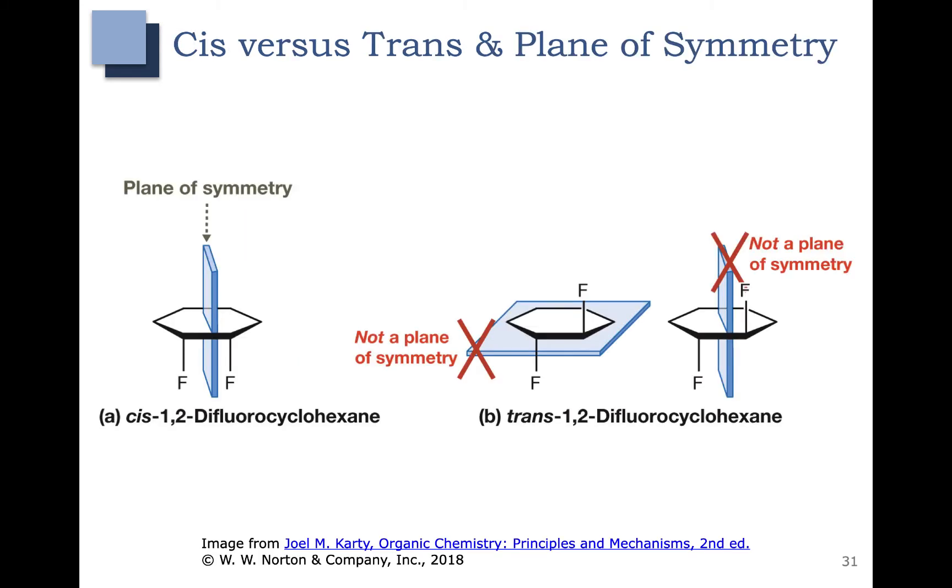Let's use this meso concept to talk about cis-1,2-difluorocyclohexane over here on the left. Cis-1,2-difluorocyclohexane has a plane of symmetry. However, it has a chiral carbon here and here. So that makes it meso because it has chiral carbons but also has a plane of symmetry.